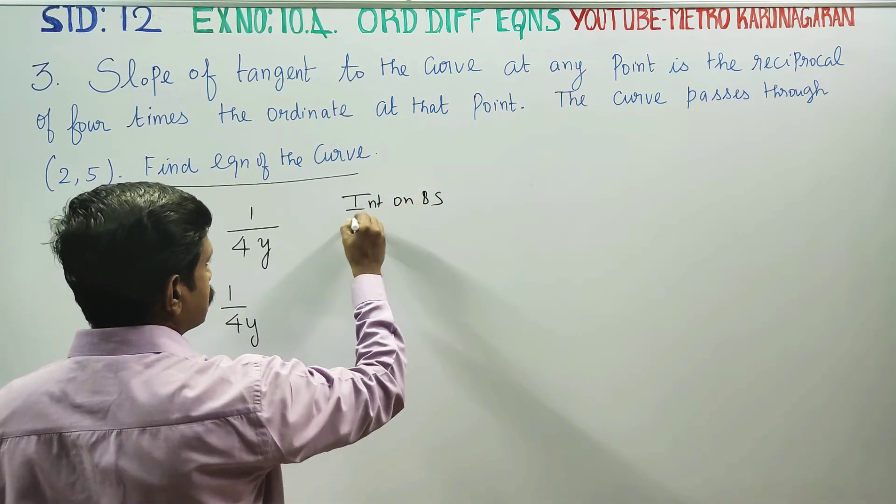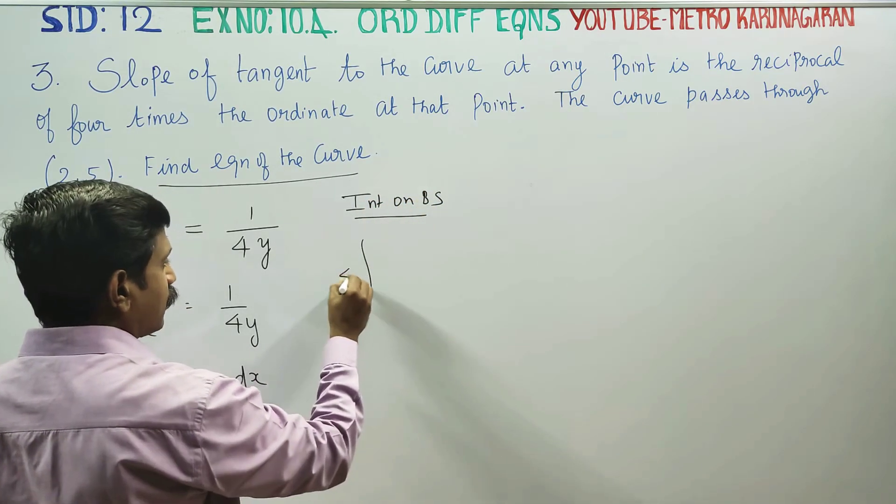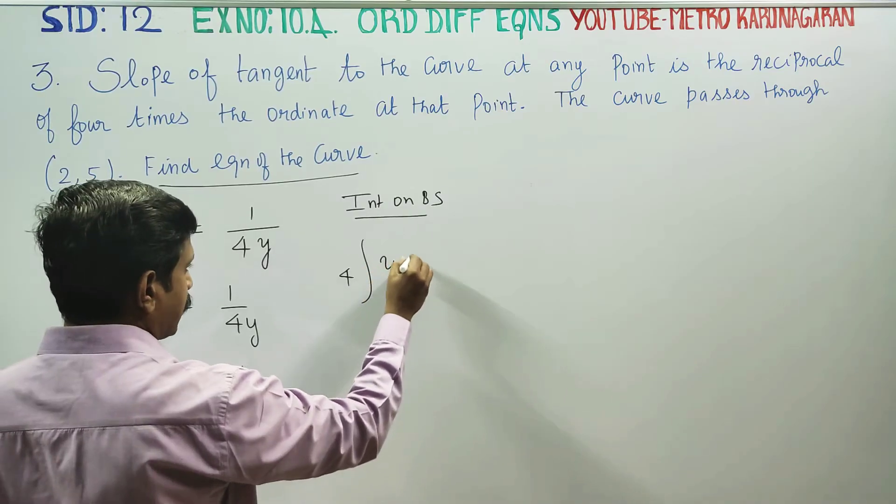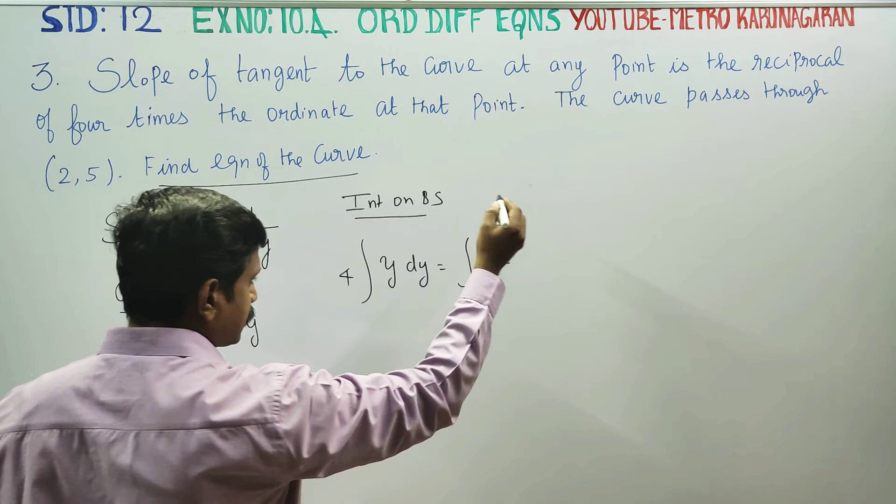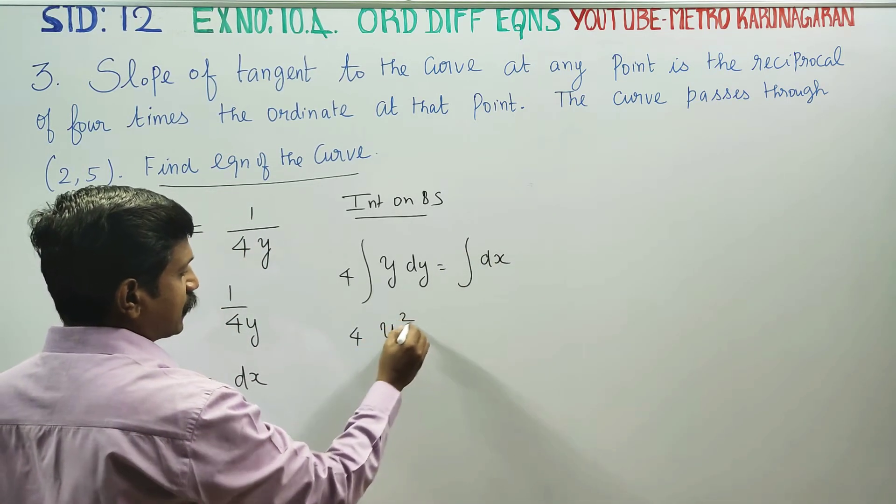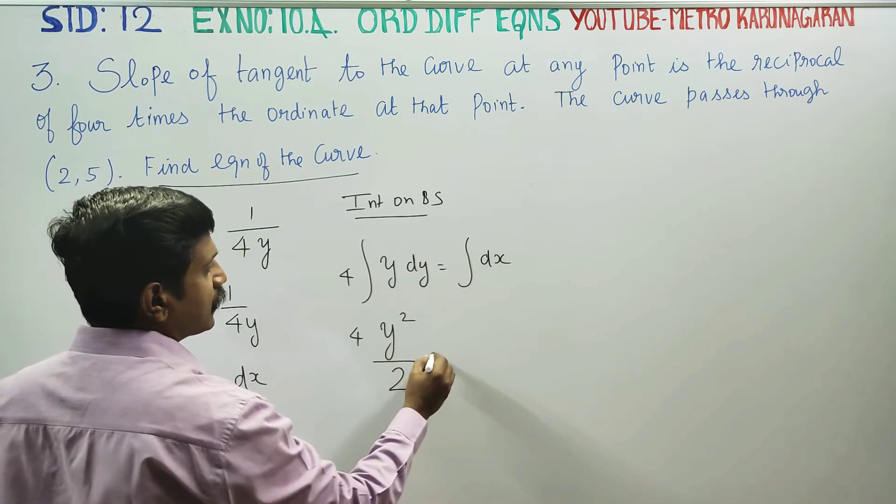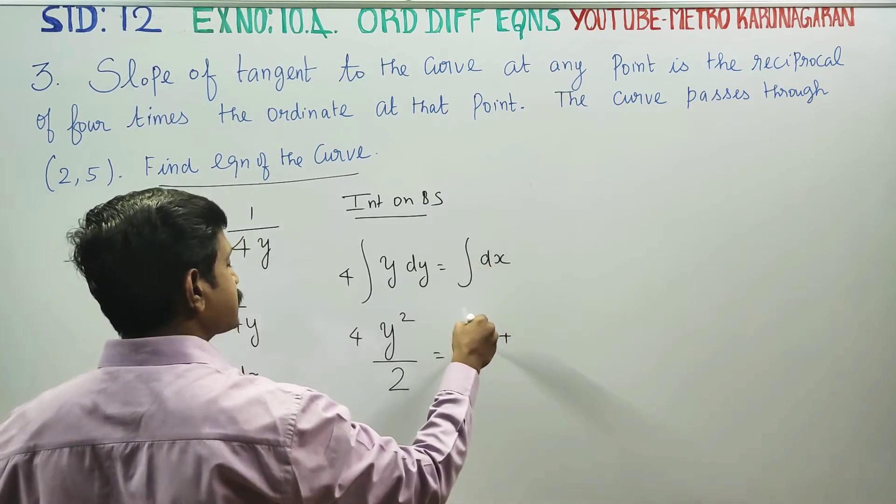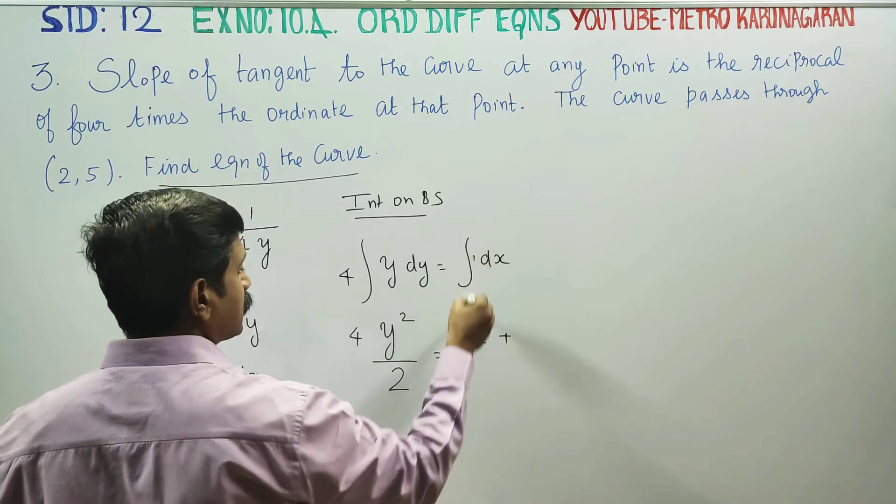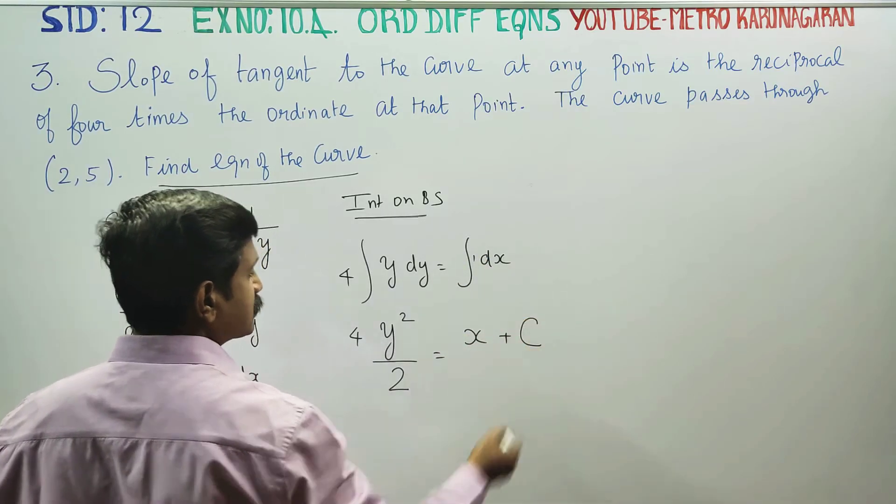Integrate on both sides. Integration of 4y dy is equal to integration of dx. 4y integrated gives y square by 2 is equal to x plus constant of integration.